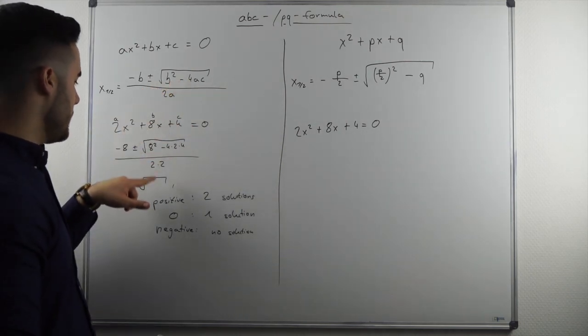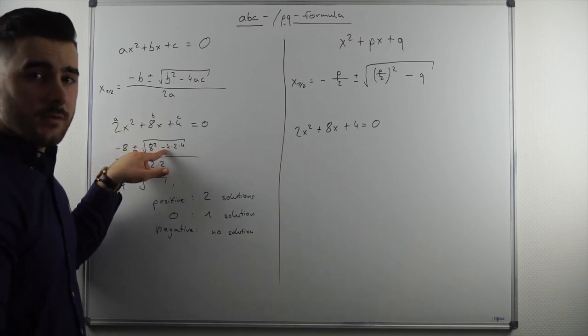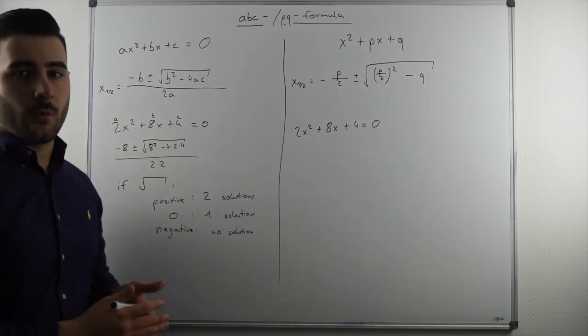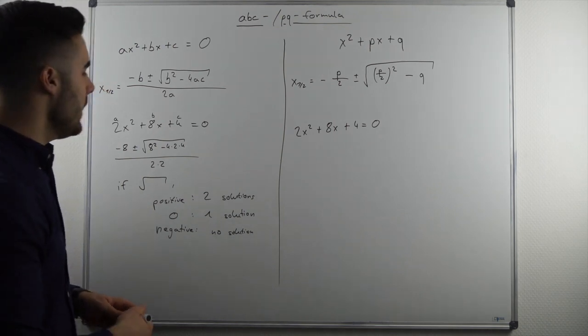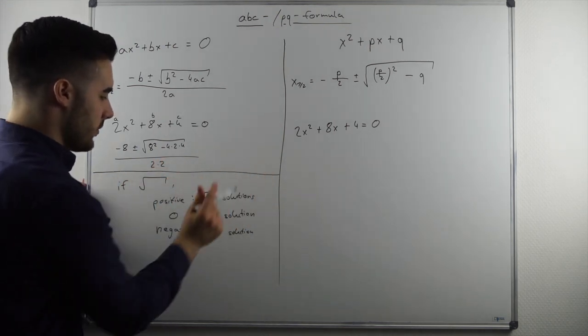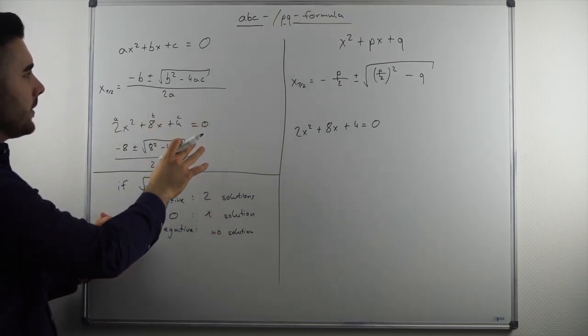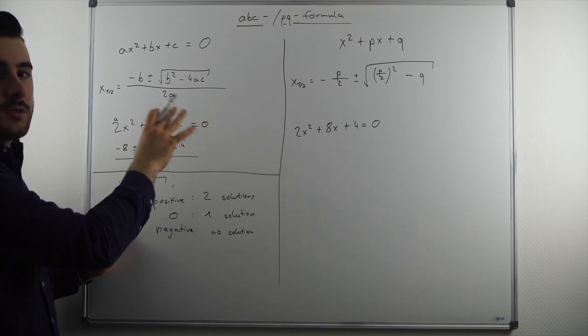If this calculation here would result in a negative outcome, the square root does not work mathematically. And as you can see now from my example and from the extra rule that I've written now, basically, the ABC formula is plug and play.